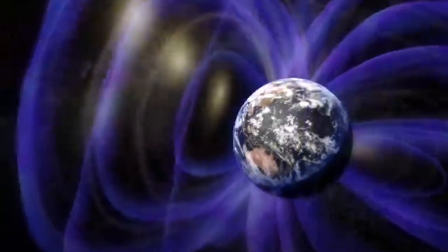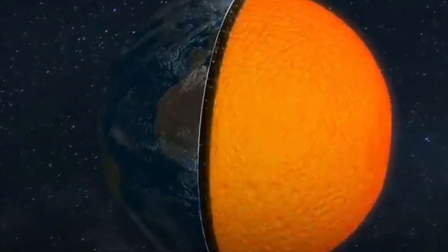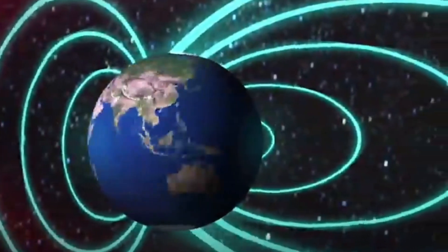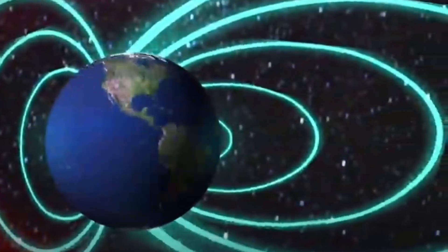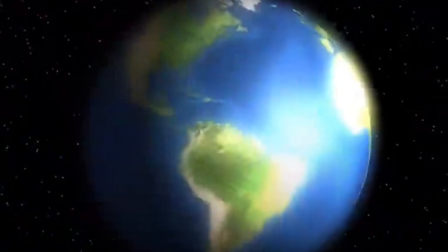No two magnetic field lines can intersect each other. Magnetic field lines are crowded in regions of strong magnetic field. On the other end, magnetic field lines are far from each other in a region of weak magnetic field.